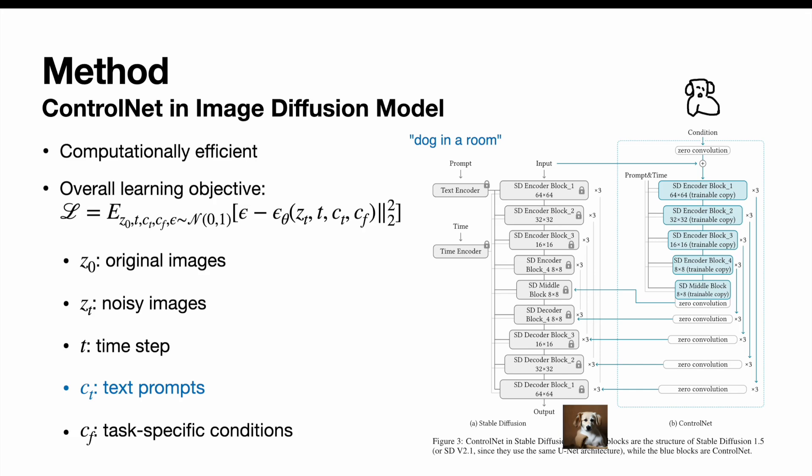To add the condition, the image-based conditions have also been converted to 64x64 feature space. The author uses ControlNet to create the trainable copy of the 12 encoding blocks and one middle block of stable diffusion. The outputs are added to the 12 skip connections and one middle block of the U-Net.